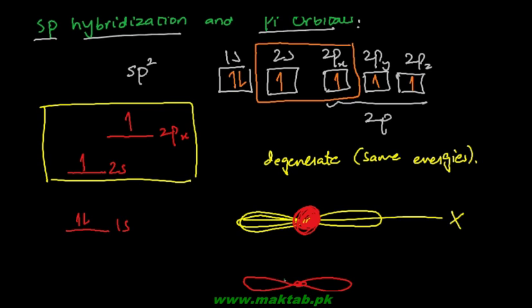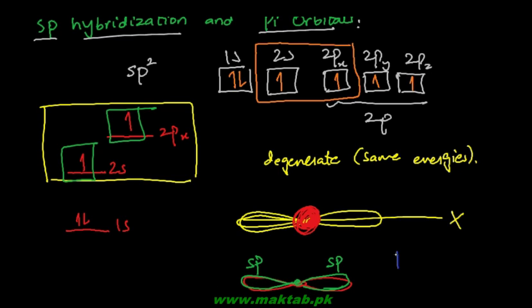This is the place where one electron resides and this is the place where the other electron resides. Because in total there were two electrons which are to be accommodated in these two new orbitals. So this is one sp orbital and this is another sp orbital.